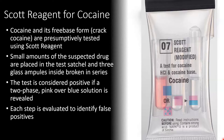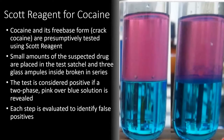Scott's reagent is designed to identify two forms of the same drug: cocaine hydrochloride and freebase cocaine, also known as crack cocaine. This is achieved by taking a small amount of the suspected drug — one milligram — and placing it inside the test satchel. Next, the three glass ampoules inside are broken in a set order. The test is considered positive if there is a two-phase pink over blue solution. Every step in the series is evaluated in order to identify false positives during testing.